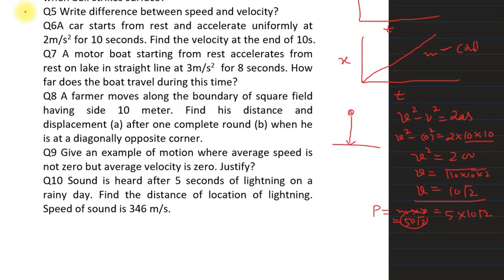Question 5: write the differences between speed and velocity. Speed is a scalar quantity while velocity is a vector quantity. Speed is always positive, whereas velocity can be positive, negative, or zero. These are the key differences between speed and velocity.